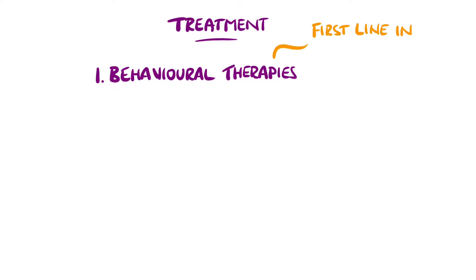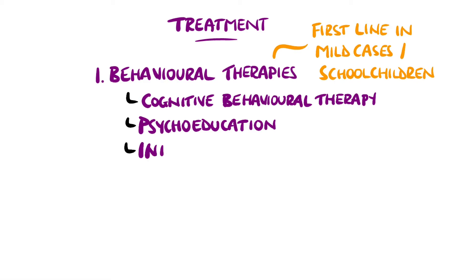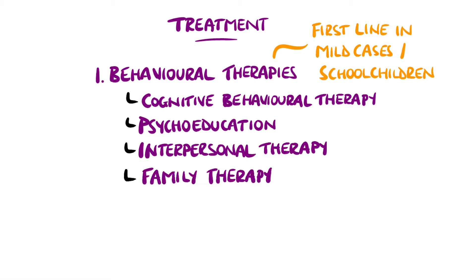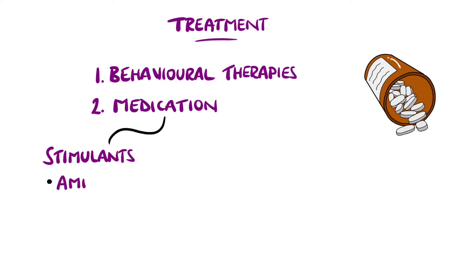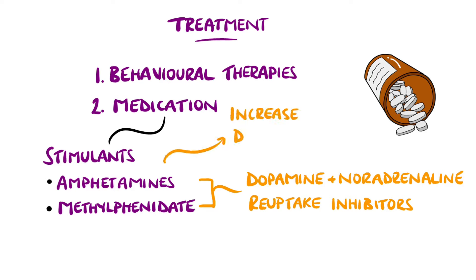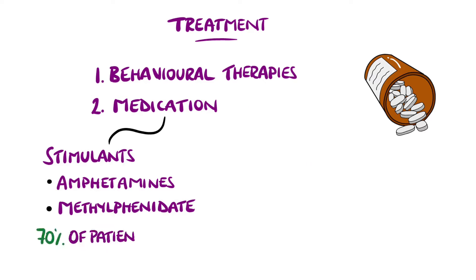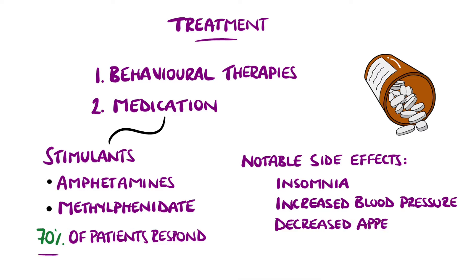The management includes the use of medication and therapy. Behavioral therapies are first line in mild symptoms or school-aged patients, and could include cognitive behavioral therapy and psychoeducation. Interpersonal therapy and family therapy are other options. The mainstay of medication are stimulants like amphetamines or methylphenidate, which are dopamine and noradrenaline reuptake inhibitors, coinciding with the suspected pathophysiology. Amphetamines have the additional effect of increasing the release of dopamine. 70% of patients respond to these medications, but side effects include insomnia, increased blood pressure, and decreased appetite.